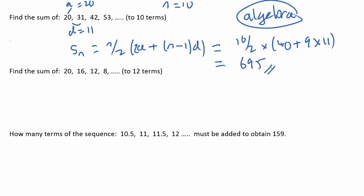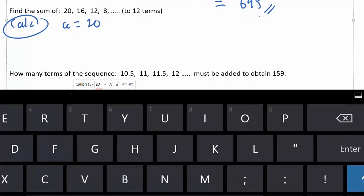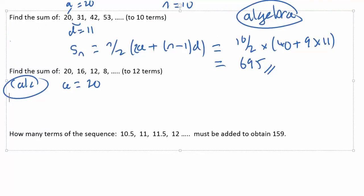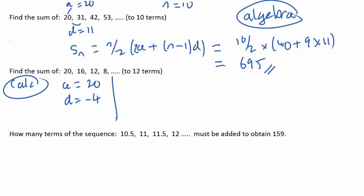In the next one, we'll do that using a calculator method. So in other words, the algebraic instructions don't appear. The first term is 20, the difference is minus 4. So I've got to write down the expression first for this sequence: 24 minus 4n.